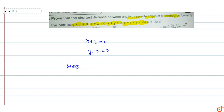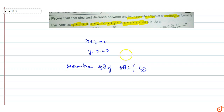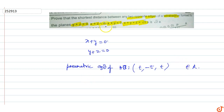The parametric equation of line AB is: x = t, y = -t, z = t, where t belongs to the real numbers.